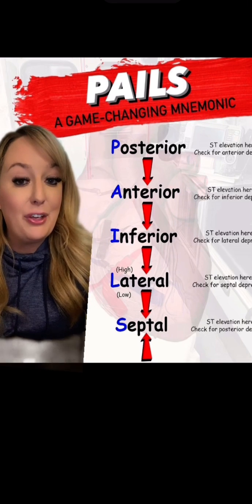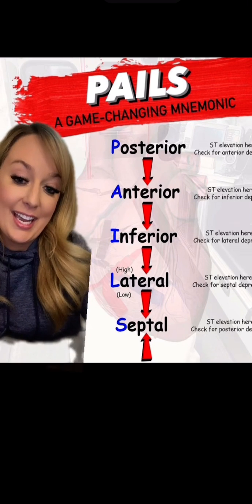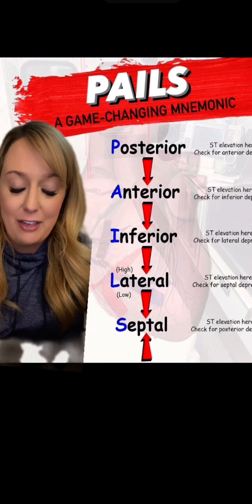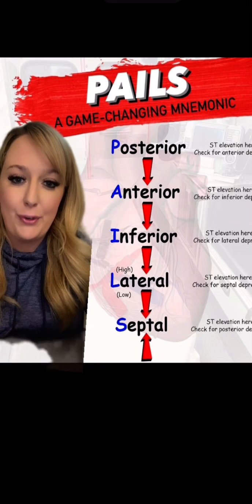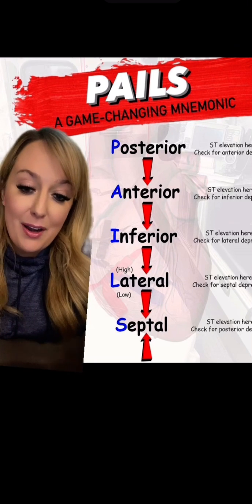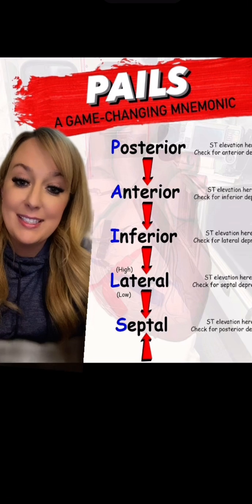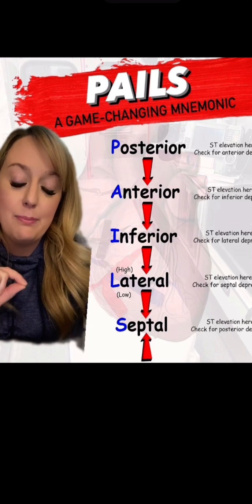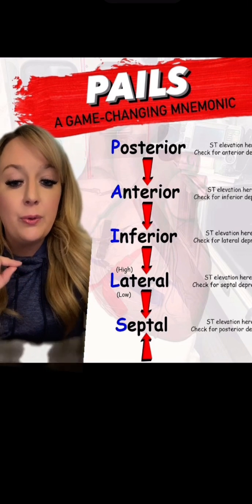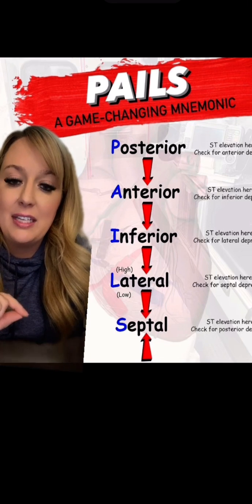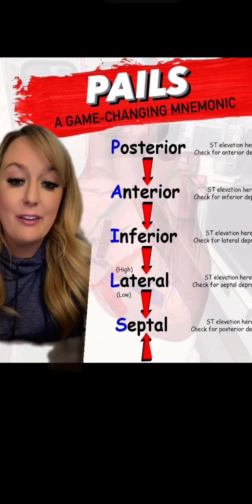And if you were to see ST elevation in your anterior leads, you would check your inferior leads for reciprocal depression. But once you get down to the bottom of your septal leads — let's say you see elevation in your septal leads — you would go all the way back around to your posterior leads to check for reciprocal depression.